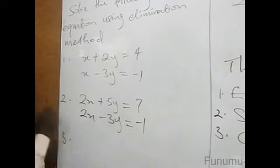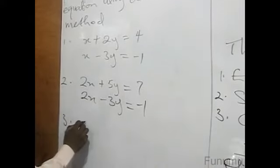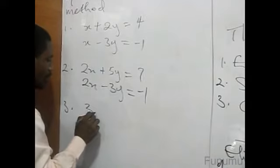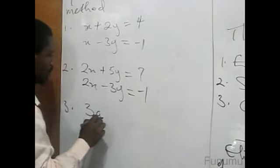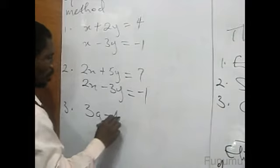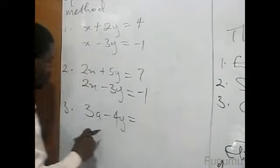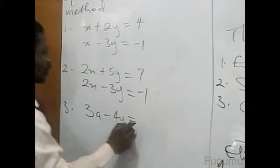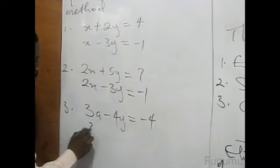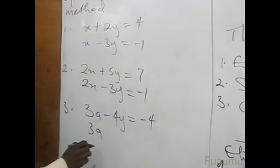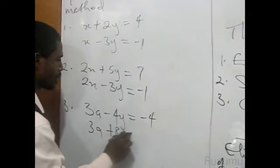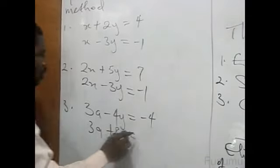Then we also have this equation: 3a minus 4y equals negative 4, and 3a plus 8y equals x.